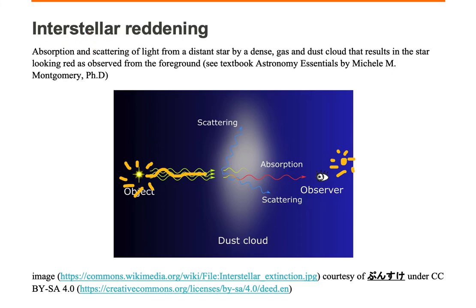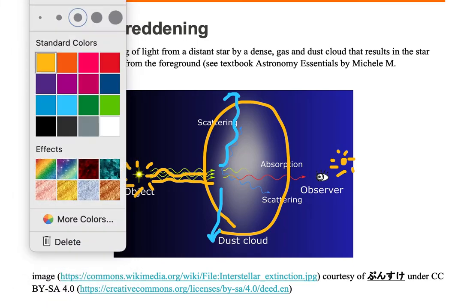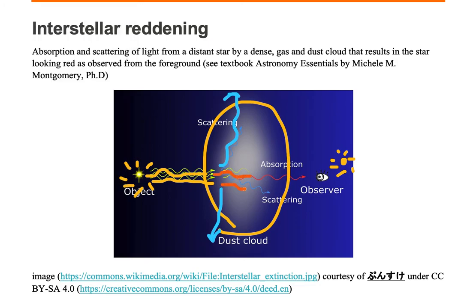This yellow light that's leaving the star hits this intervening gas and dust cloud, which scatters blue light out of the cloud and turns this yellow light into more of an orange light as it travels through the cloud. The cloud is absorbing the light, and that yellow light gets stretched even further into red light as it leaves the cloud.